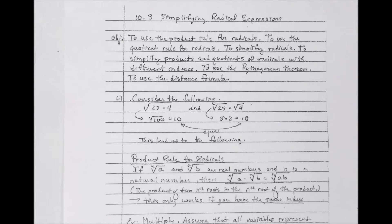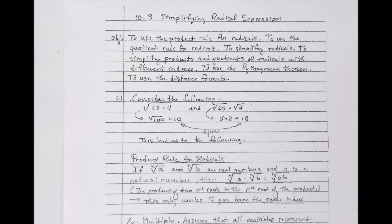Chapter 10, Section 3: Simplifying Radical Expressions. In this section, we're going to look at the product rule for radicals and the quotient rule for radicals, both of which I'm going to introduce. We're going to simplify radicals, simplify products and quotients of radicals with different indices, use the Pythagorean theorem, and the distance formula, which is derived from the Pythagorean theorem.